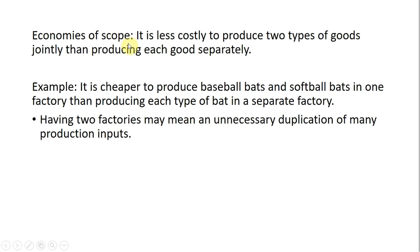Economies of scope occurs when it is less costly to produce two types of goods jointly than producing each good separately.